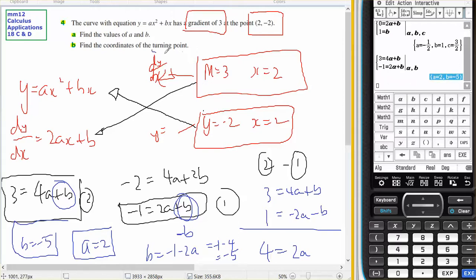And then find the coordinates of the turning point. Okay, so what have I got? The turning point will be when the derivative equals 0. So this is my derivative.